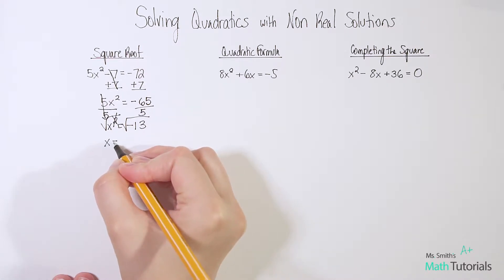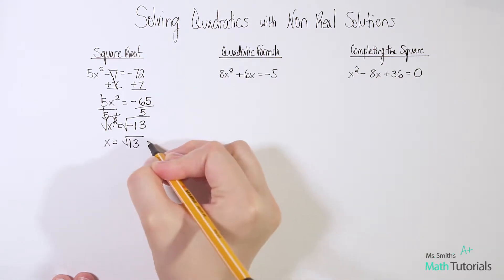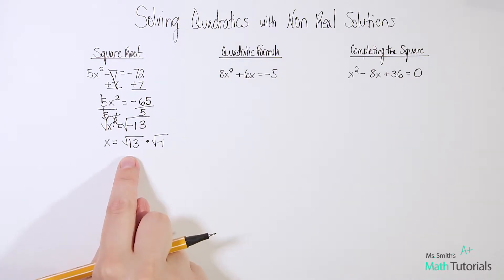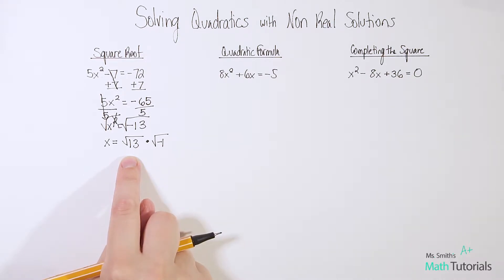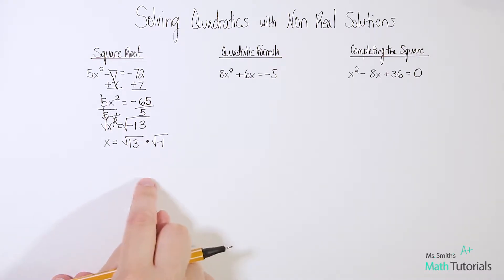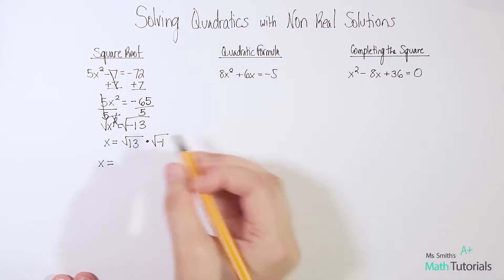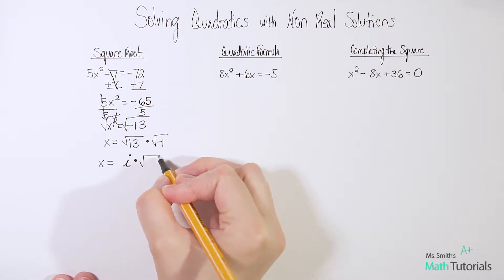So we've got x equals — we can separate the 13 away from the negative. Remember, we take the square root of 13 times the square root of negative one; it's like we separated the 13 and the negative away from each other. Now, square root of 13 — I could look to see if I can simplify this radical, and actually I can't. If you don't know what I mean by simplifying a radical, watch my video on simplifying radicals. Square root of 13 is in its most simplified form — the only two factors I could pull out would be 1 and 13, so that doesn't get me anywhere. So at this point I've got x equals the square root of negative one, which remember reduces to just i, times the simplified radical, square root of 13.